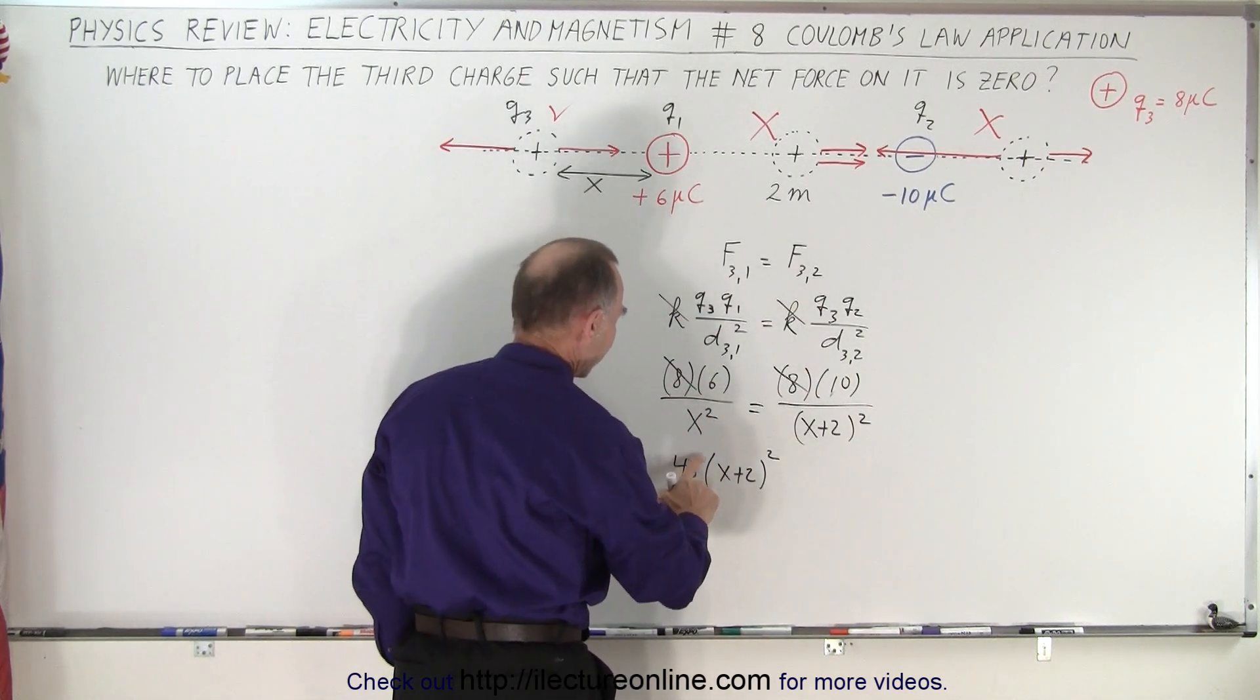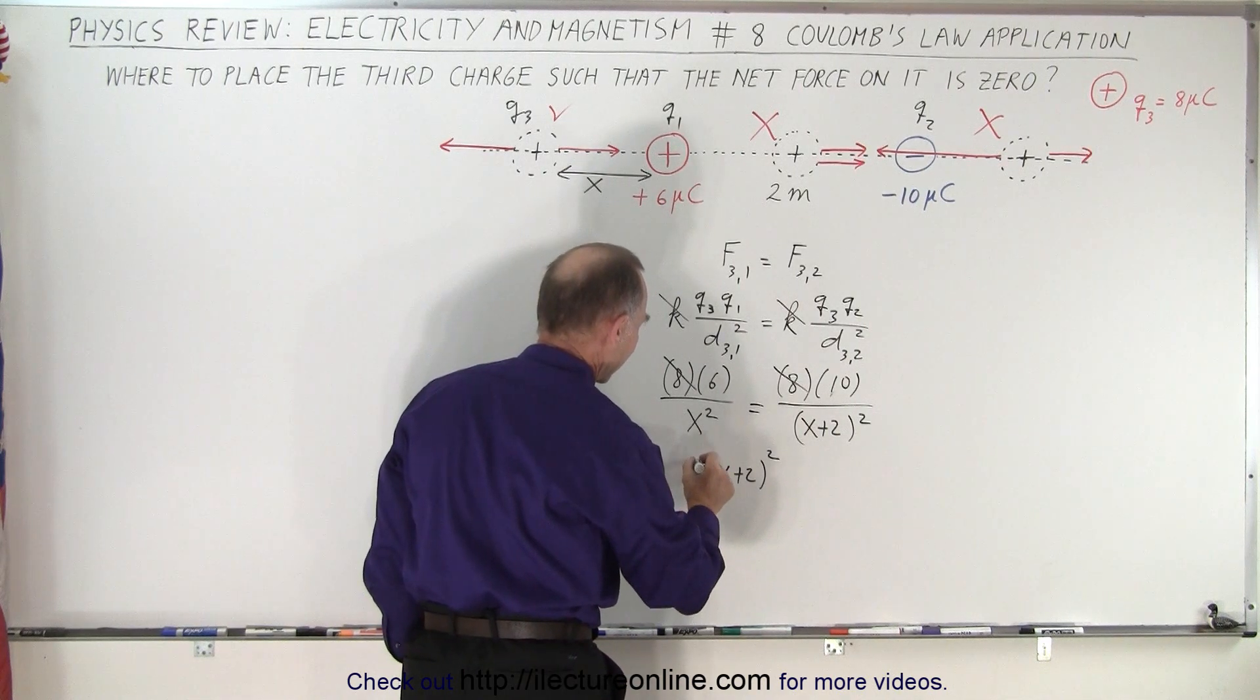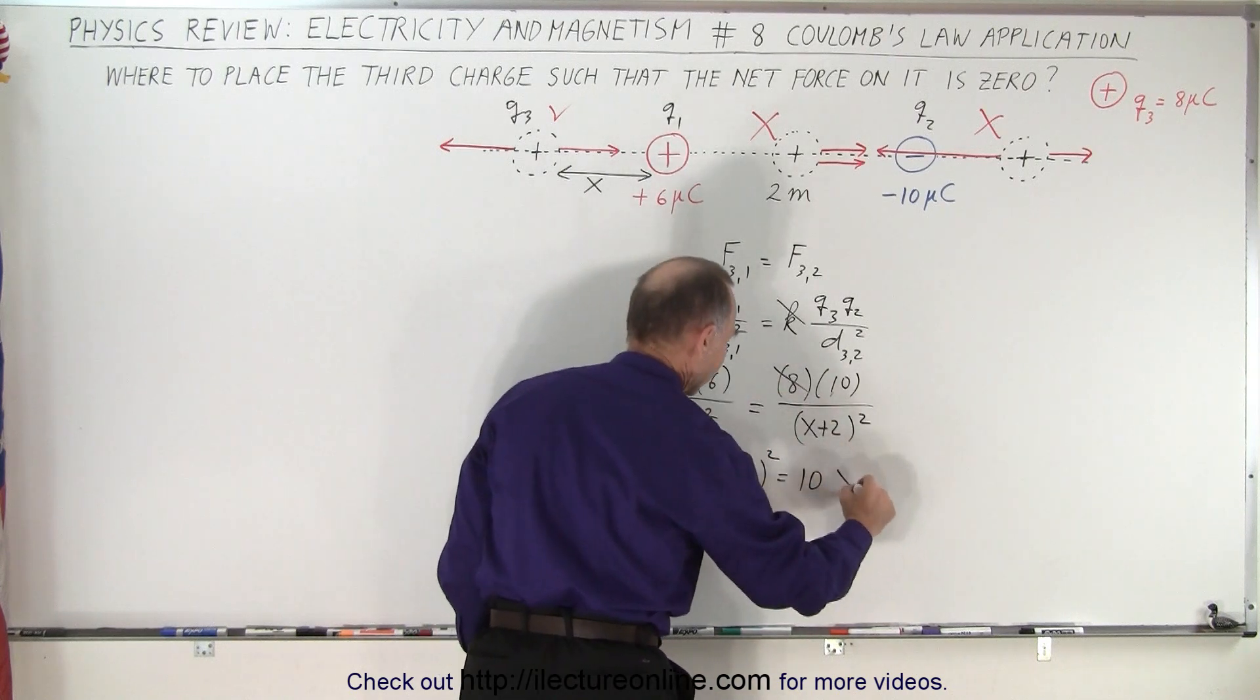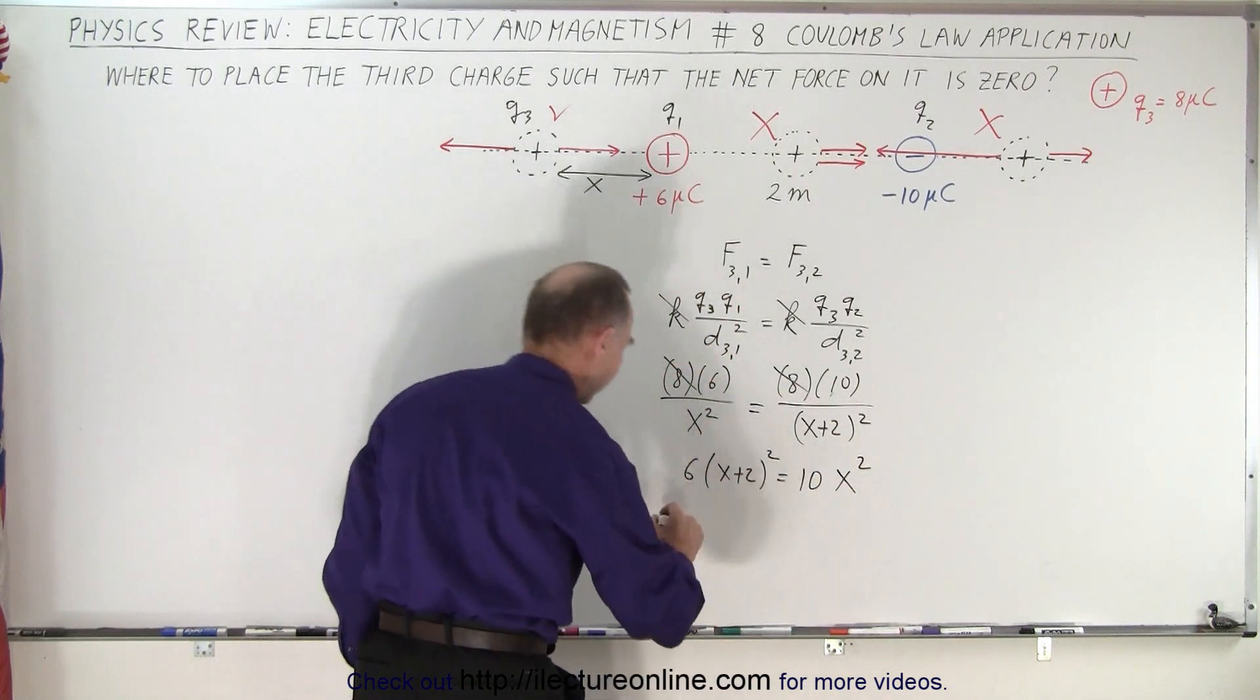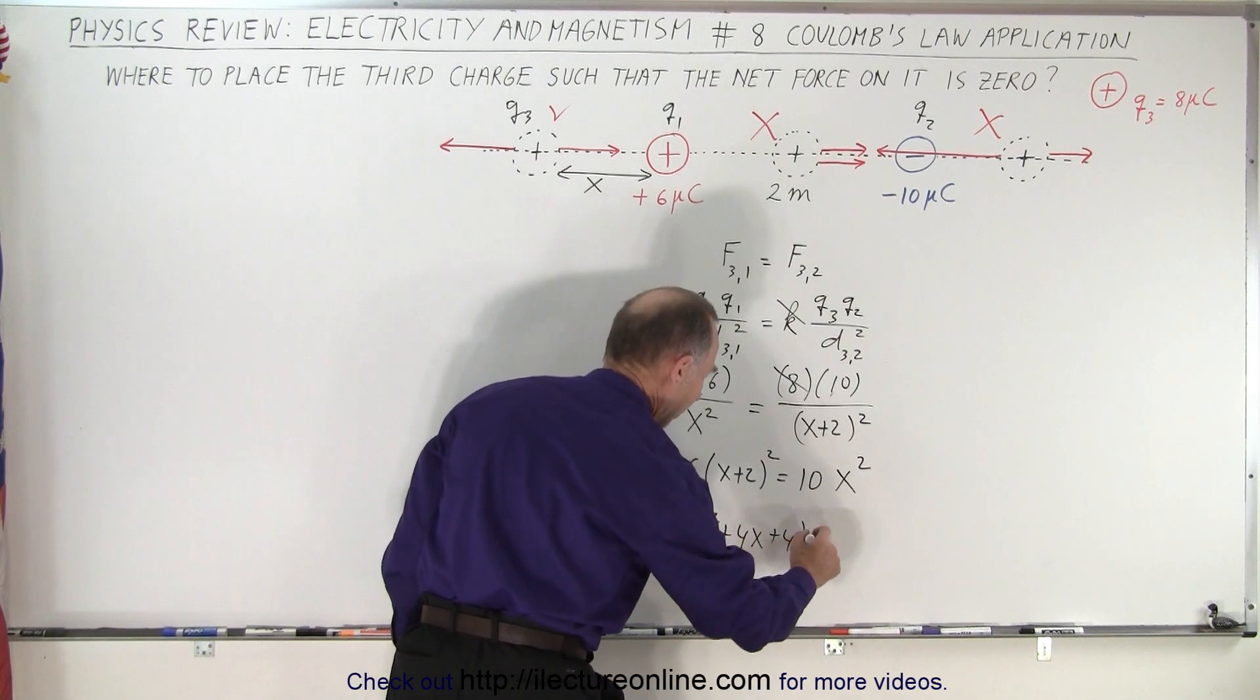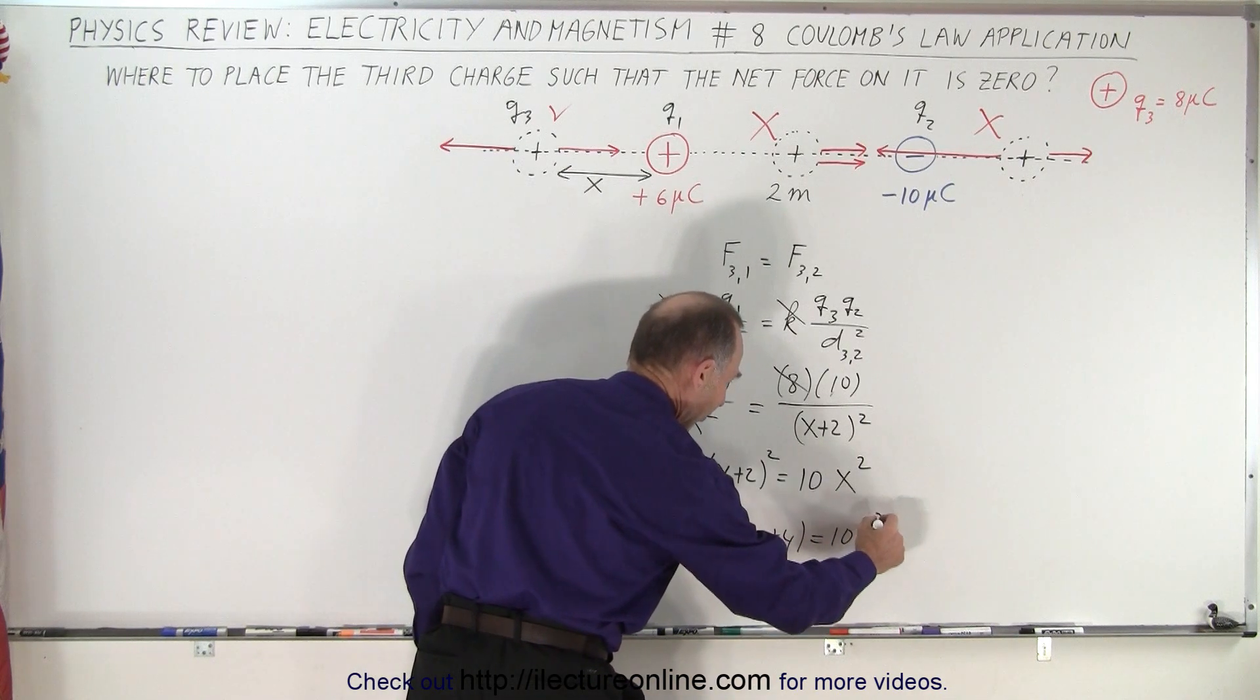We might as well make it simple. So in that case, we don't have a 48 there. We simply have a six there. And on the right side, this will be ten times X squared. Multiplying this out, we get six times X squared plus four X plus four equals ten X squared.